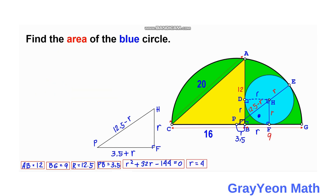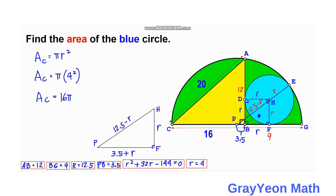For the final step, since we have the radius of the blue circle, the area A equals pi times r squared equals pi times 4 squared equals 16pi square units, and that is our answer.